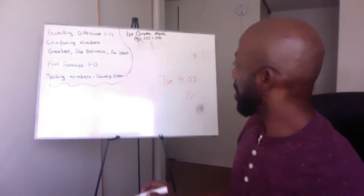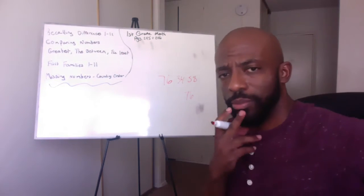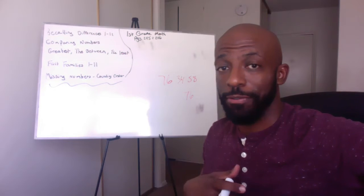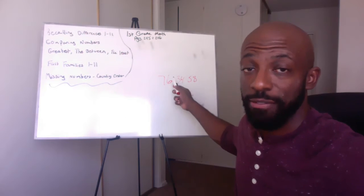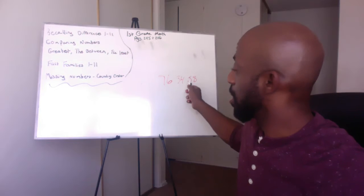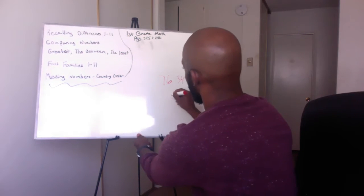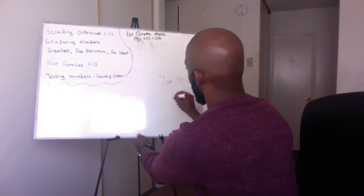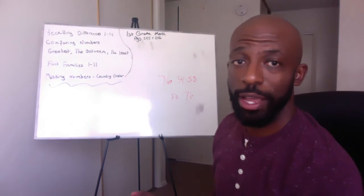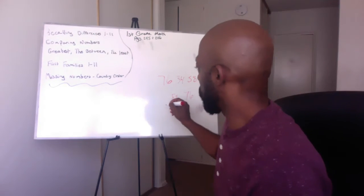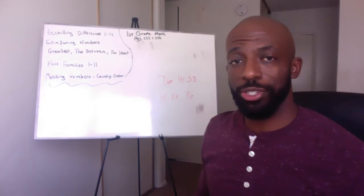So we're going to write 76. Then we have to look at 34 and 58 — which is biggest? Looking at the tens place: the five or the three. The five is the biggest, so we put 58 right here in the middle. And then the next number is 34 — we know that's the last spot, so 34 is going to go all the way in front and that's going to be the least. That's least to greatest.